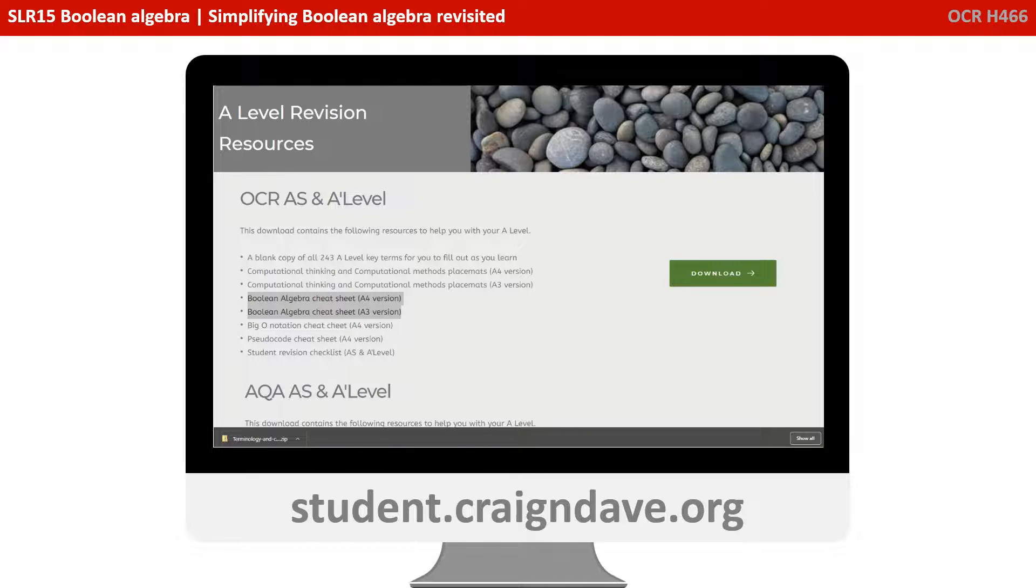You can find this over at students.craiganddave.org. Just scroll down to where it says A-level revision. If you select that, you will see OCR A-level revision including a whole bunch of free resources including these cheat sheets. You can click download, no subscription or logins required, and you'll get access to this cheat sheet.